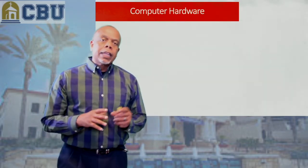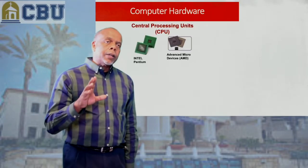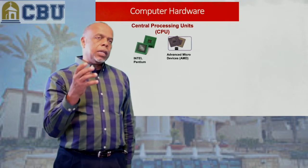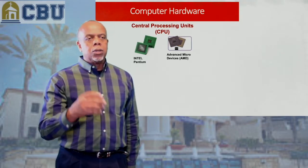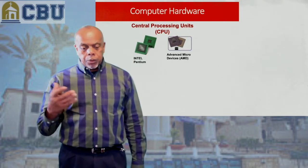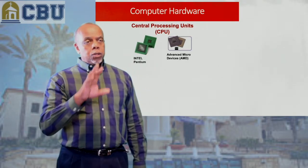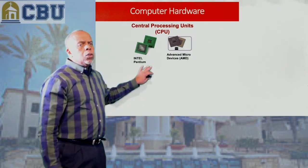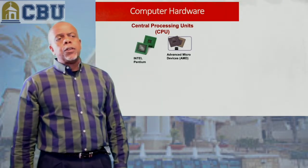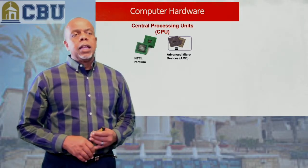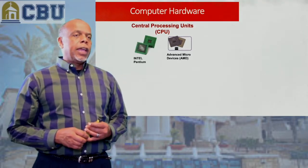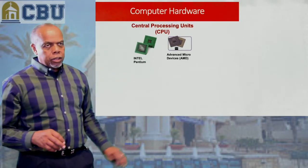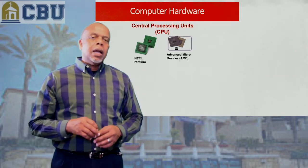Now let's take each of these layers a little bit deeper. When we're talking about hardware, really at the core is your CPU — your central processing unit. Two major distributors of CPUs are Intel and AMD, or Advanced Micro Devices. A lot of the computers we use have Intel Pentium processors.